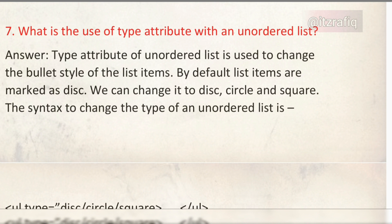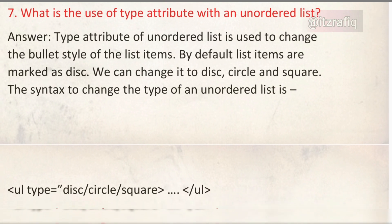Number seven: what is the use of the type attribute with an unordered list? The type attribute of an unordered list is used to change the bullet style of the list items. By default they are marked as discs, and we can change them to circle, disc, or square.